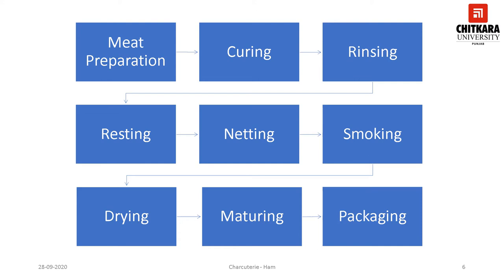After that comes rinsing. After the meat is taken from dry cure or brine, it must be rinsed and washed in cold water to get rid of excess salt that might be stuck to the surface. Next is resting: the ham is hung for 12 to 24 hours to dry. This helps to form a dry skin on the surface, also known as pellicle, which is essential prior to smoking and ensures that the smoke adheres to the surface.